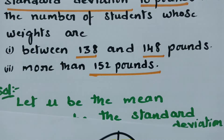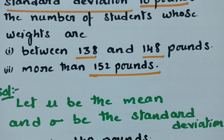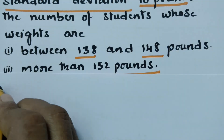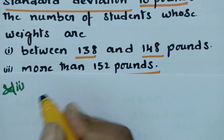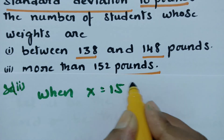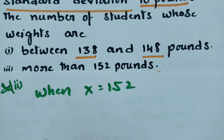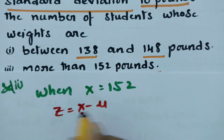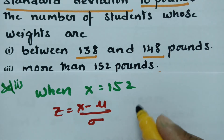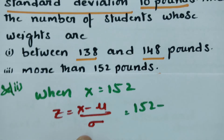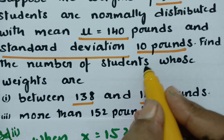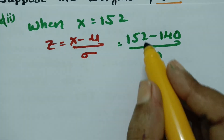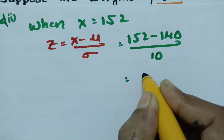The second question is more than 152 pounds. For x = 152, z = (152 − 140) / 10 = 12/10 = 1.2. Let this value be z1 = 1.2.